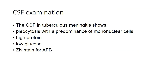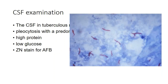Coming to CSF examination in tuberculous meningitis — a detailed discussion will be in subsequent classes. Briefly: the CSF shows a characteristic pleocytosis with a predominance of mononuclear cells, a high protein level, and a low glucose level. In addition, a Ziehl-Neelsen stain may be done for highlighting acid-fast bacilli. These are the acid-fast bacilli highlighted by the Ziehl-Neelsen stain in the CSF.